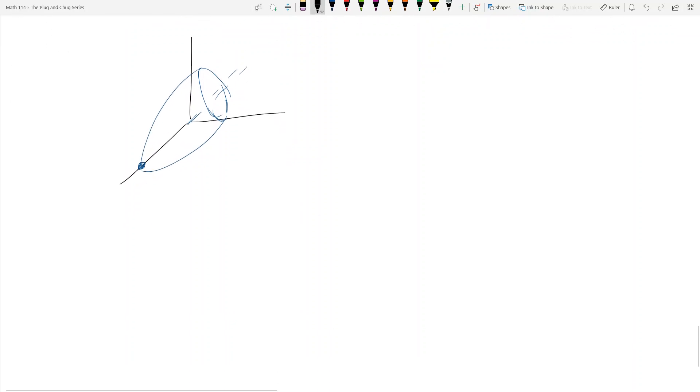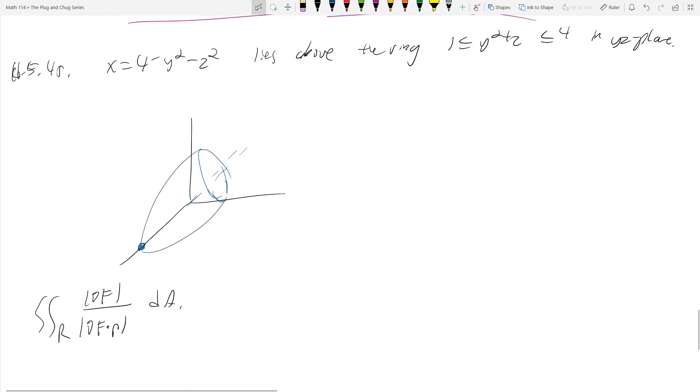So how do we do this? Well, we can use the implicit formula, which is the double integral over the region of the gradient of f over the gradient of f dot p, and then dA. So let's try this formula and see how it goes. Remember f has to be a function of x, y, z equal to a constant. So we take that guy, and we take our equation of our paraboloid, and we move everything over to one side. So now I have x plus y squared plus z squared is equal to four.